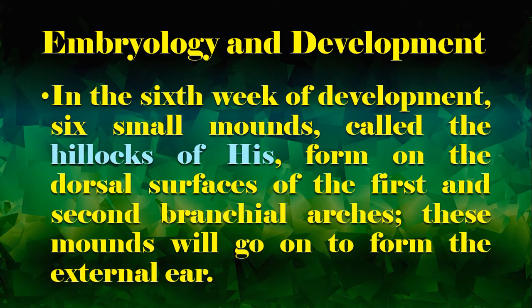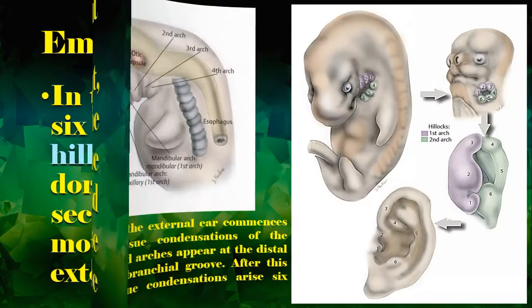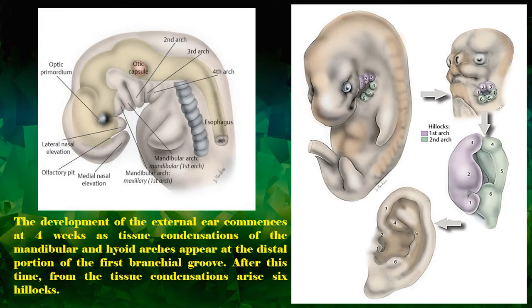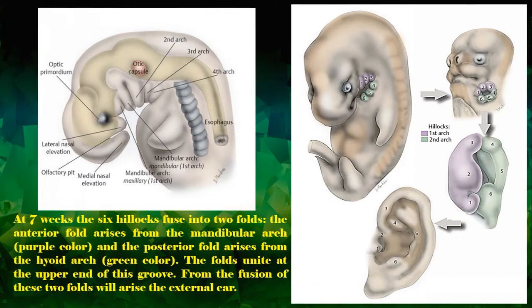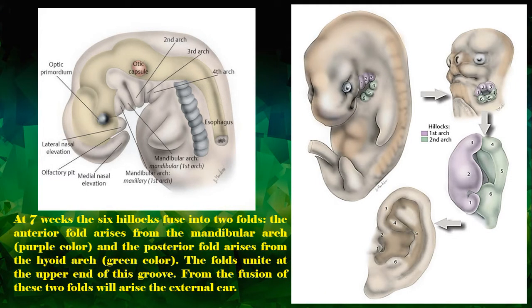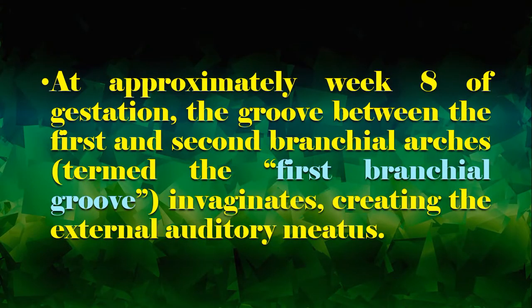In the 6th week of development, 6 small mounds called the hillocks of Hesse form on the dorsal surface of the first and second branchial arches. These mounds will go on to form the external ear.